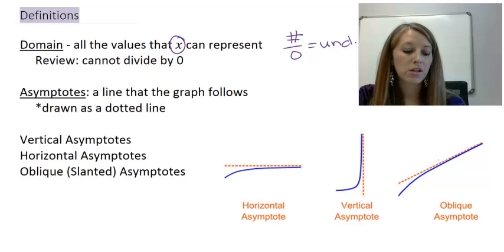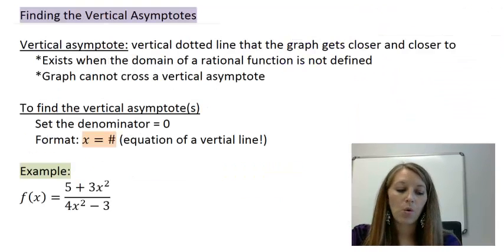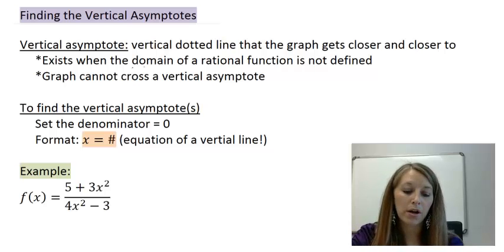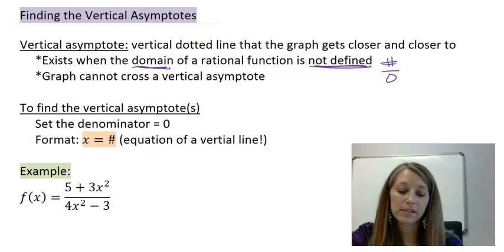So going back to the first definition here of domain, what happens when we have an x-value that is divided by zero that cannot be represented by part of the domain? Well, that gives us a vertical asymptote. So again, it's a vertical line, and this becomes when our domain of something is not defined. And since we are in the rational function, that's because we have zero in the denominator.